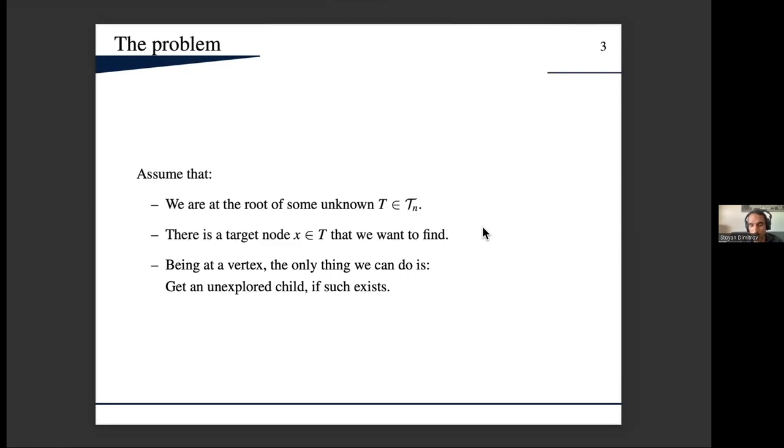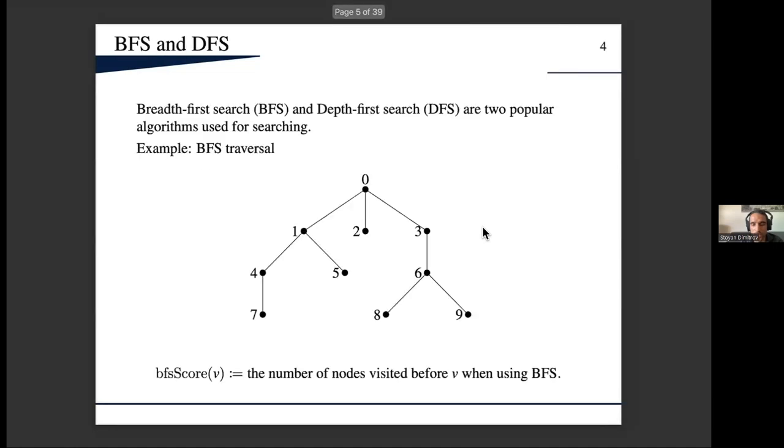We don't have any additional information here. For example, we don't know how many children we have if we are at a certain vertex—nothing pretty much. Okay, this is a problem for searching. We have to search in trees, and when we have searching in trees or graphs we immediately can think of breadth-first and depth-first search.